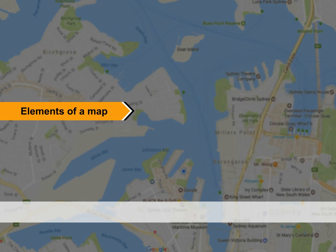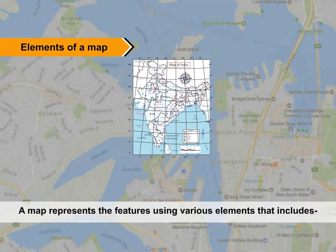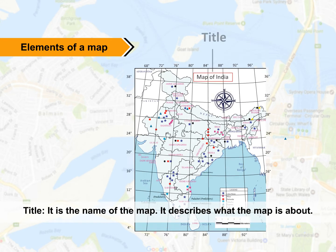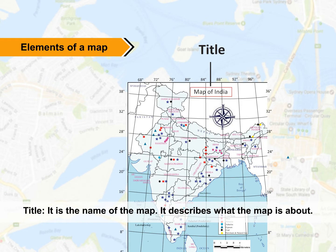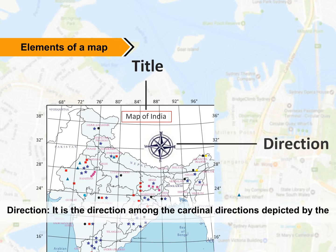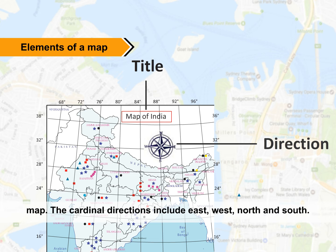Elements of a Map: A map represents features using various elements. The title is the name of the map — it describes what the map is about. Direction refers to the cardinal directions depicted by the map.